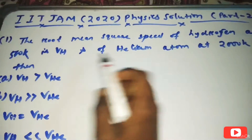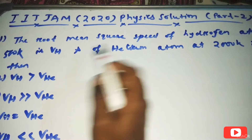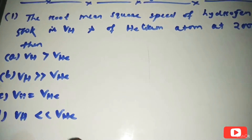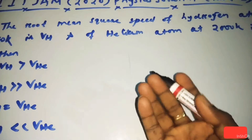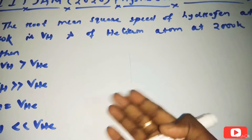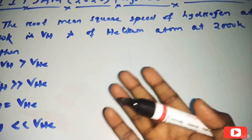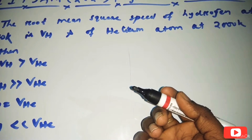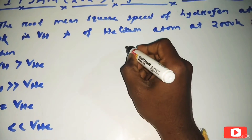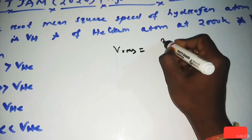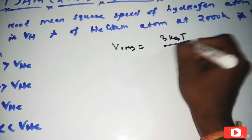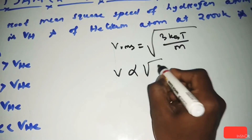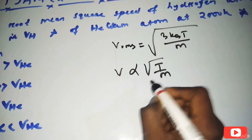The first question: the root mean square speed of a hydrogen atom at 500 Kelvin is VH, and for a helium atom at 2000 Kelvin. So we know that the root mean square speed, most probable speed, and average speed formulas are: most probable = √(2kT/m), average = √(8kT/πm), and V_rms = √(3kT/m).